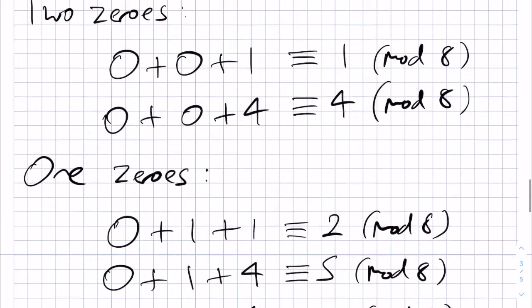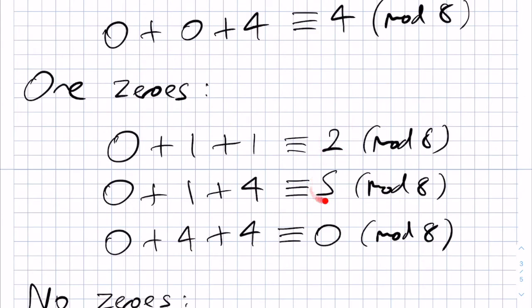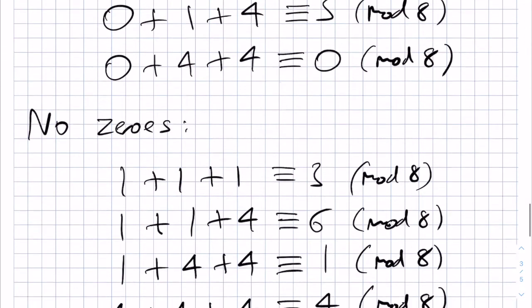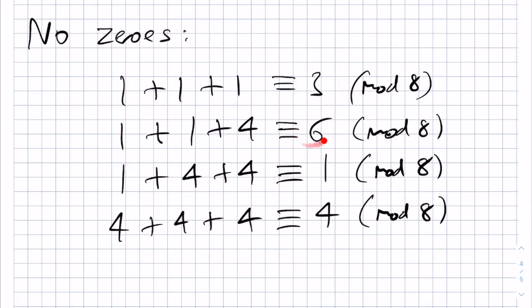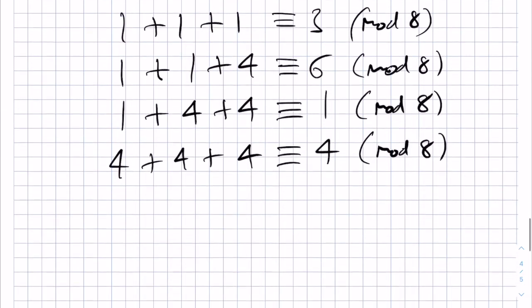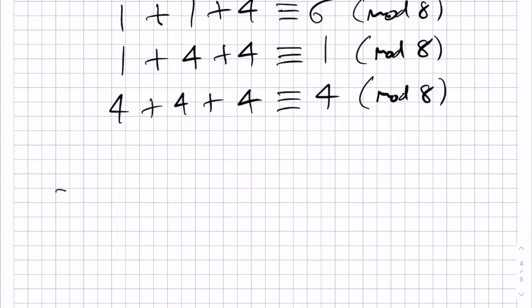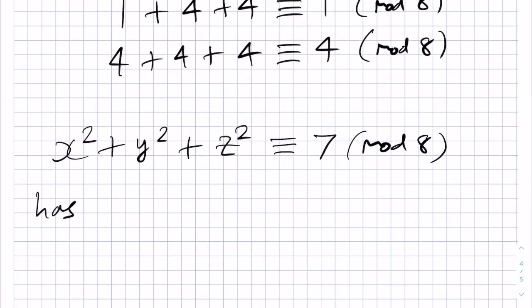Now that we've checked all of the cases, and in all of them we do not get a 7, which we have in our modulo equation, we only get things like 1, 3, 4, 6, 0, 2, 5, we can be sure that our equation in modulo form, x squared plus y squared plus z squared being congruent to 7 modulo 8 has no integer solutions.